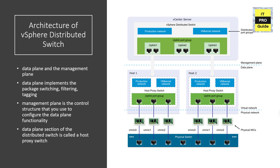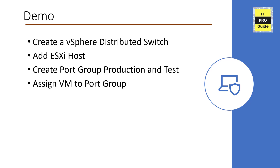The data plane remains locally on every host associated with the distributed switch. This data plane section is called the host proxy switch. The network configuration you create on vCenter (the management plane) is automatically pushed down to all the host proxy switches. So when vCenter is down, all your virtual machines running on ESXi hosts continue to work — vCenter is just the management plane. You cannot modify configurations when vCenter is down, but existing configurations will continue to work.